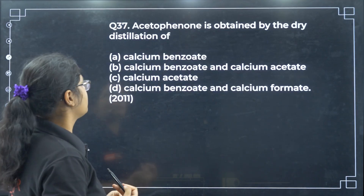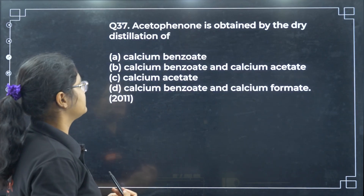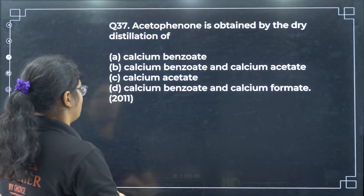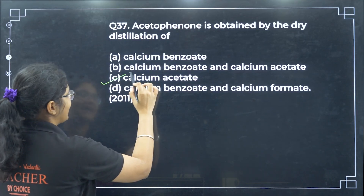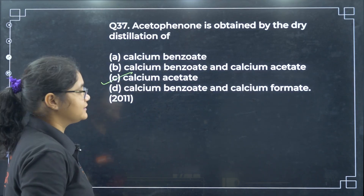Acetophenone is obtained by the dry distillation of calcium acetate — as already discussed.